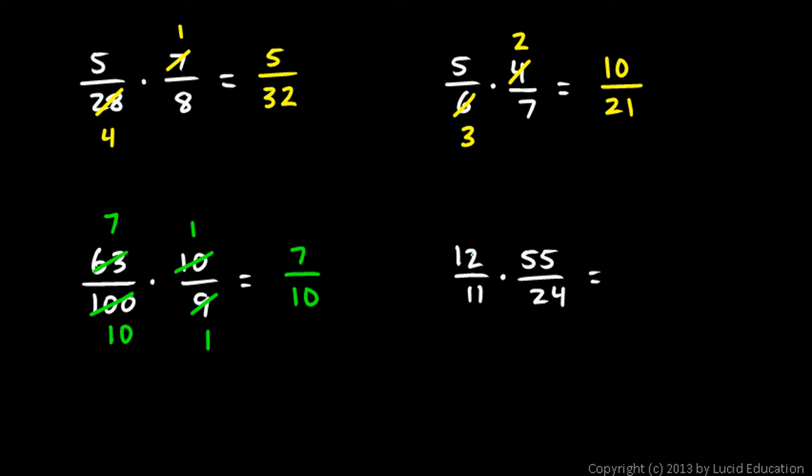We'll do the same thing over here. 12 over 11 times 55 over 24. The 12 and the 24, that reduces to a 1 over 2. And 11 and 55, that becomes a 1 and a 5. So then I multiply. 1 times 5 is 5, and 1 times 2 is 2. 5 halves is my answer.